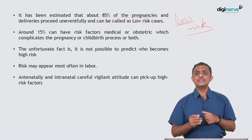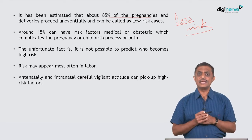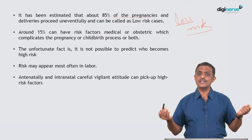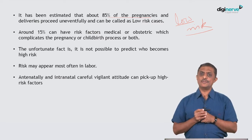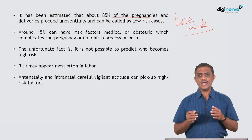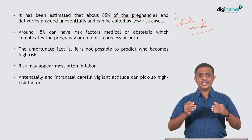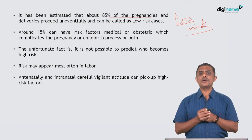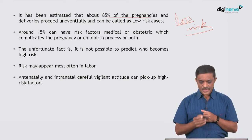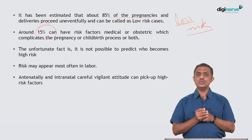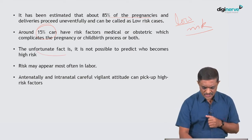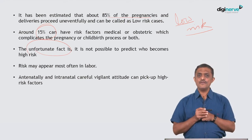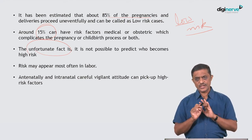Why should I call them low risk when there is no risk? I will explain that a little later. Around 15% of pregnant mothers can have associated medical issues or can develop problems that are unique to pregnancy, making them high risk. So 15% of pregnant mothers will fall into the high-risk category.